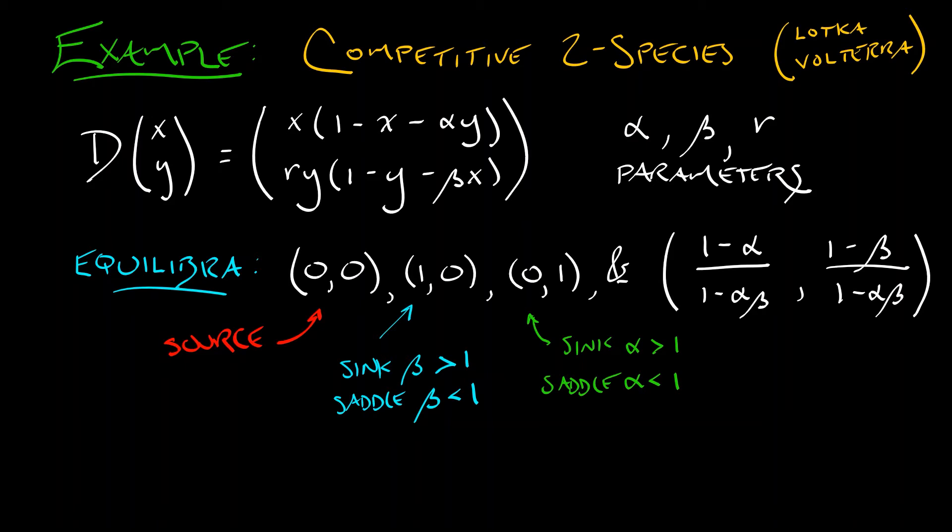That fourth equilibrium, which only really physically made sense for certain sets of values of alpha and beta, this also had some peculiar classification. So this was a sink if alpha and beta are both less than 1, and a saddle if alpha and beta are both greater than 1.